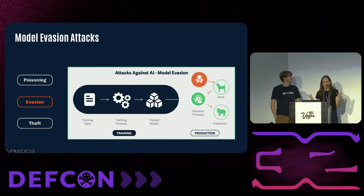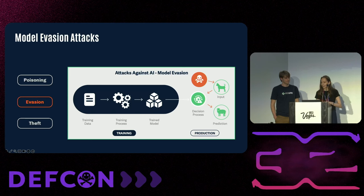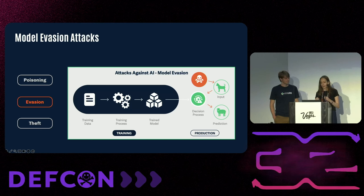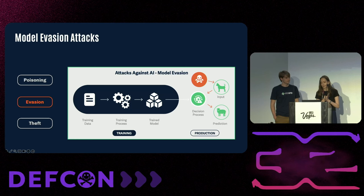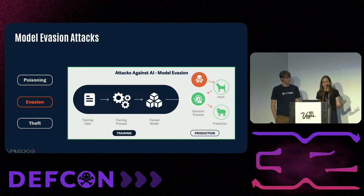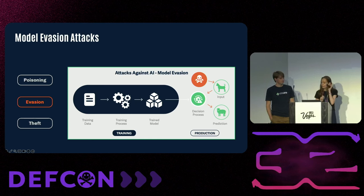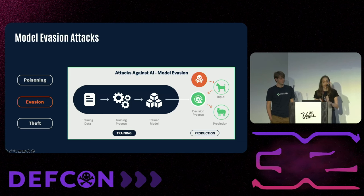Then we have model evasion attacks. Inference attacks exploit AI models by querying them to extract sensitive information, often using slightly varied inputs to reconstruct the model, leading to potential model theft or bypass. Evasion attacks use subtle input changes — like adding invisible noise — to trick models into misclassifications. These techniques have been used by cybercriminals to bypass security systems like spam filters, malware detection, and biometric authentication.